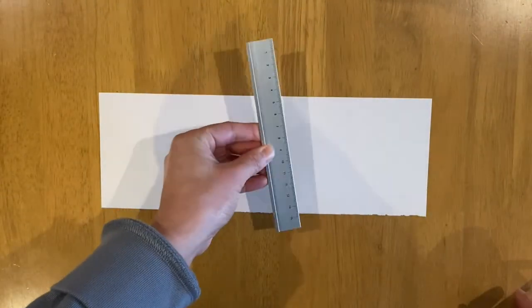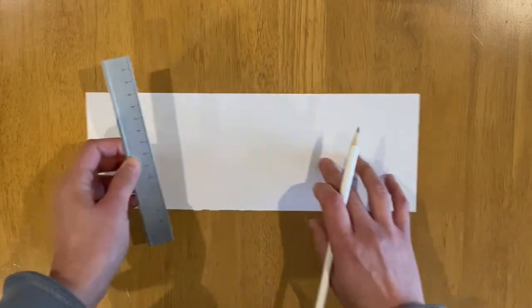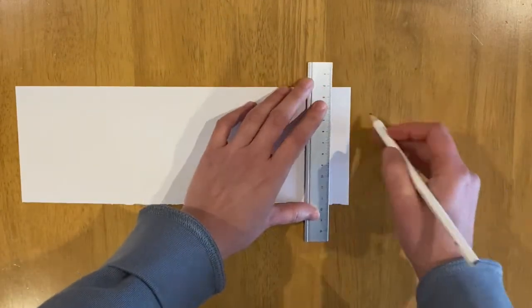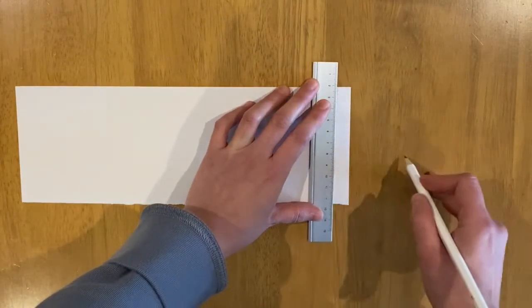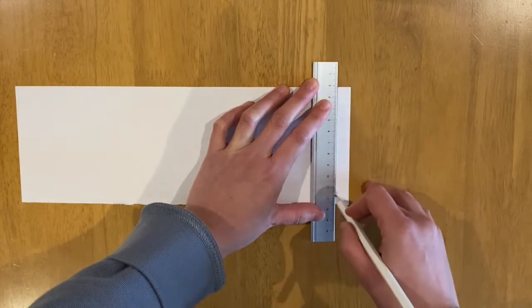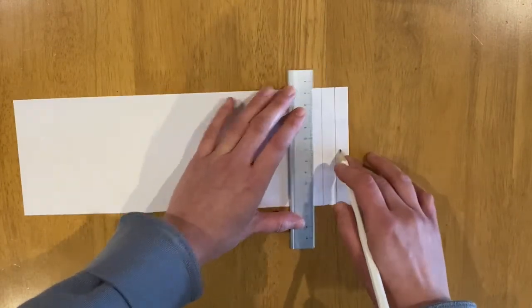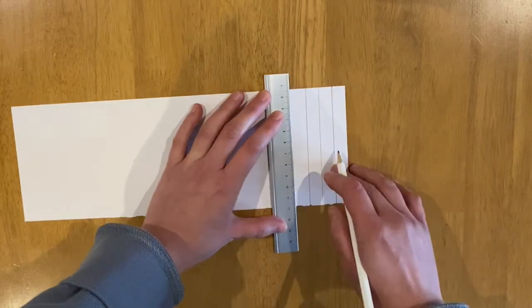Then you get your ruler or whatever straight thing you have and you're going to draw lines this way so that you can have a bunch of long skinny rectangles. So I'm going to do it quickly to show you.